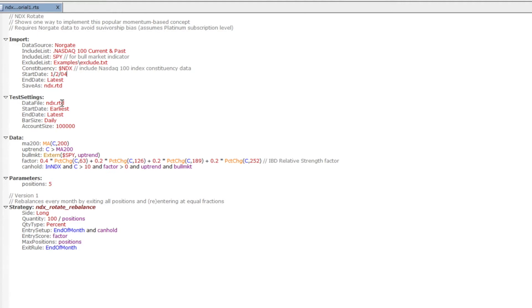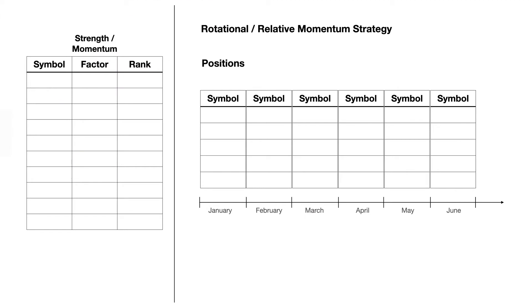Our test settings are pretty much standard with an account size of $100,000. Let's take a quick look at how rotational strategies work — sometimes these are also called relative momentum strategies.